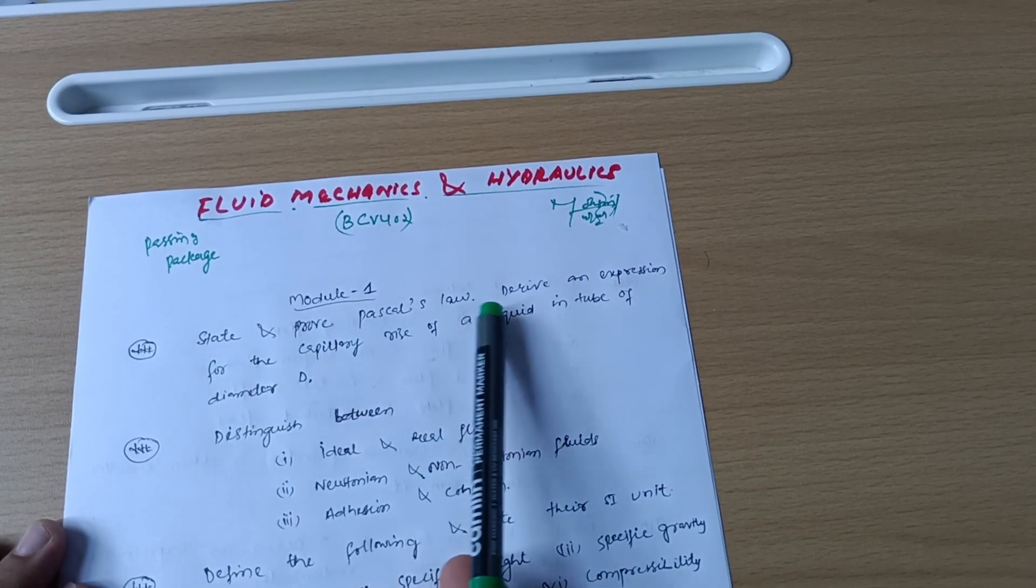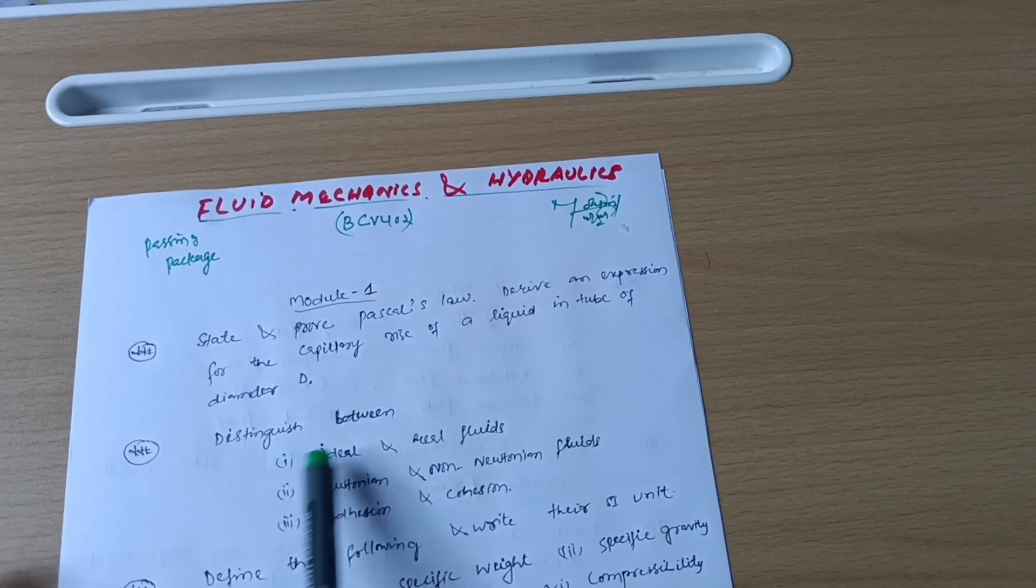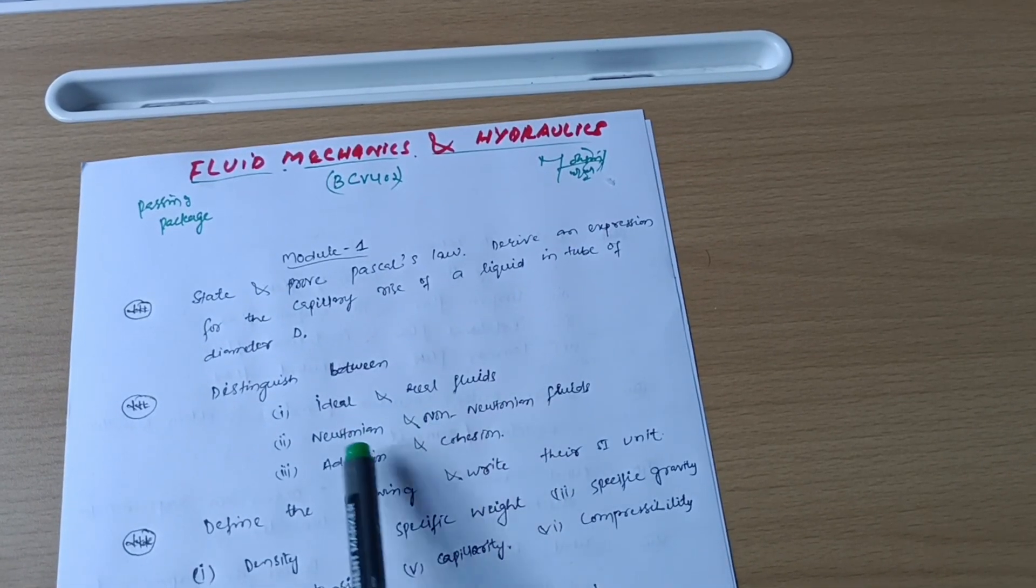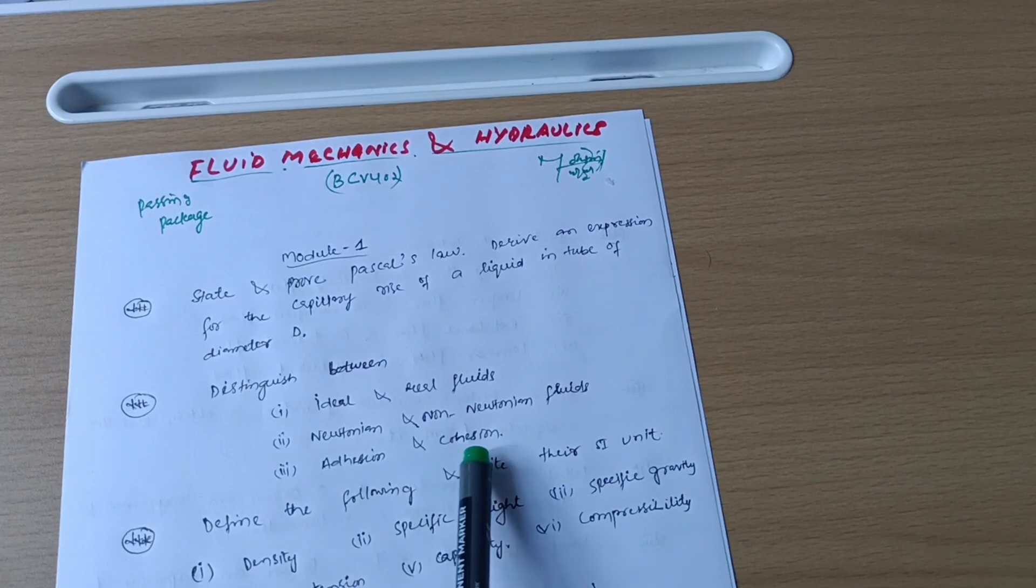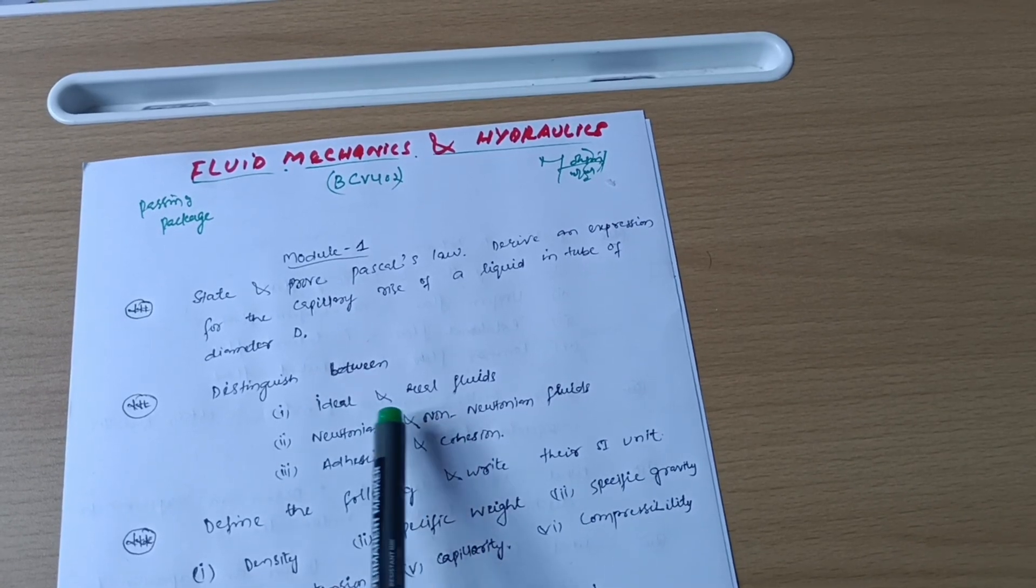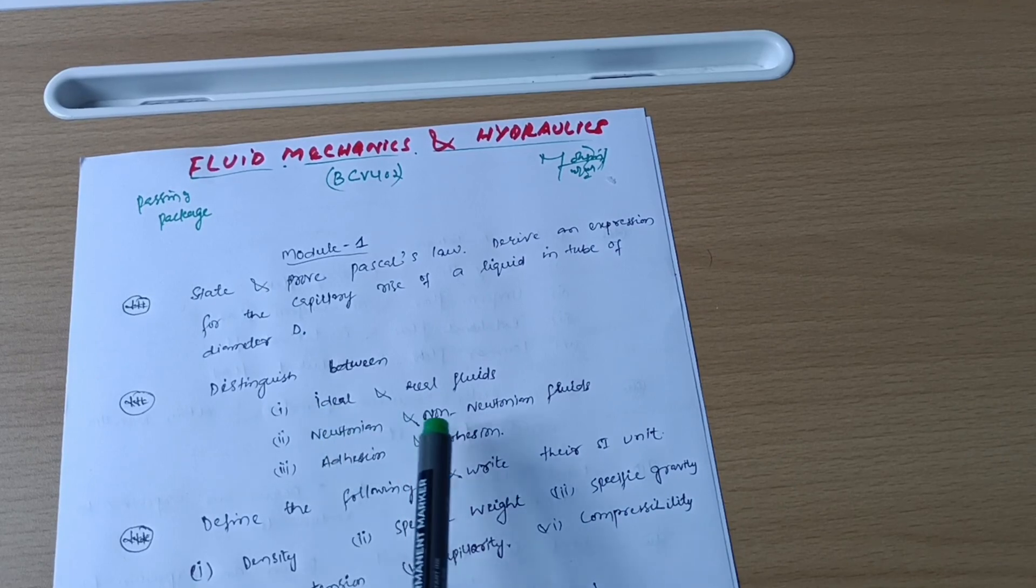State and prove Pascal's law. Derive an expression for the capillary rise of a liquid in tube of diameter D. Distinguish between ideal and real fluids, Newtonian and non-Newtonian fluids, and adhesion and cohesion. Sometimes they will ask you definitions also. When you go through these topics, automatically you will come to know the difference also.